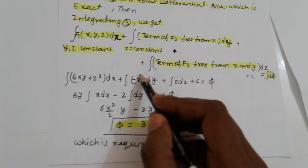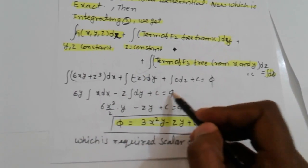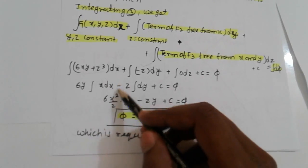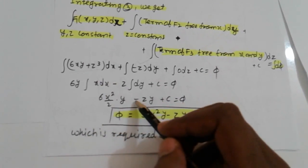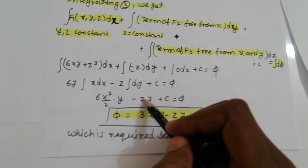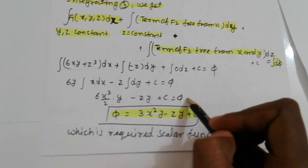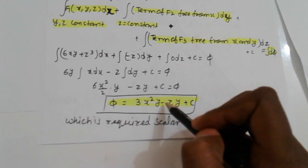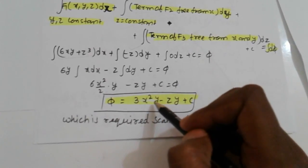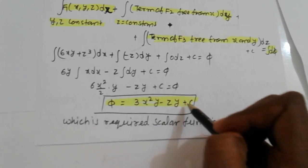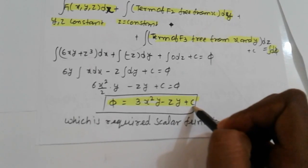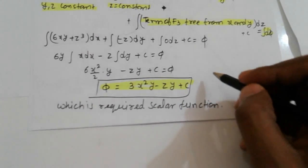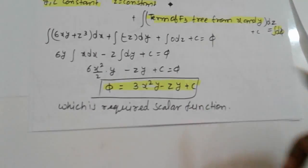Simplifying: integrating 6xy gives 3x²y, integrating z³ gives x·z³, and minus z dy gives minus zy. Therefore phi equals 3x²y - zy + c, which is the required scalar function phi.